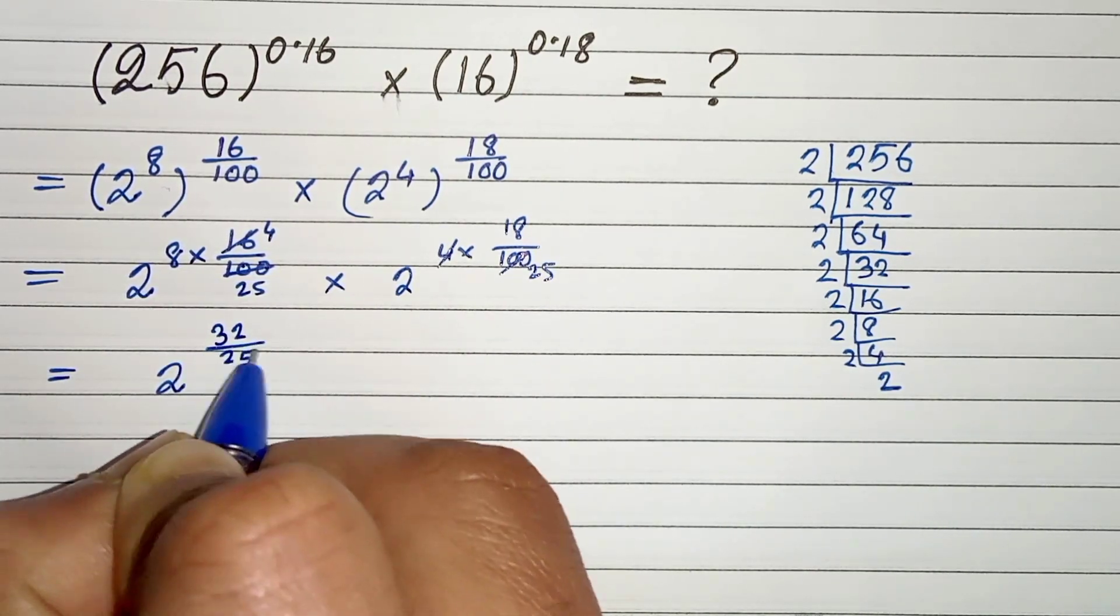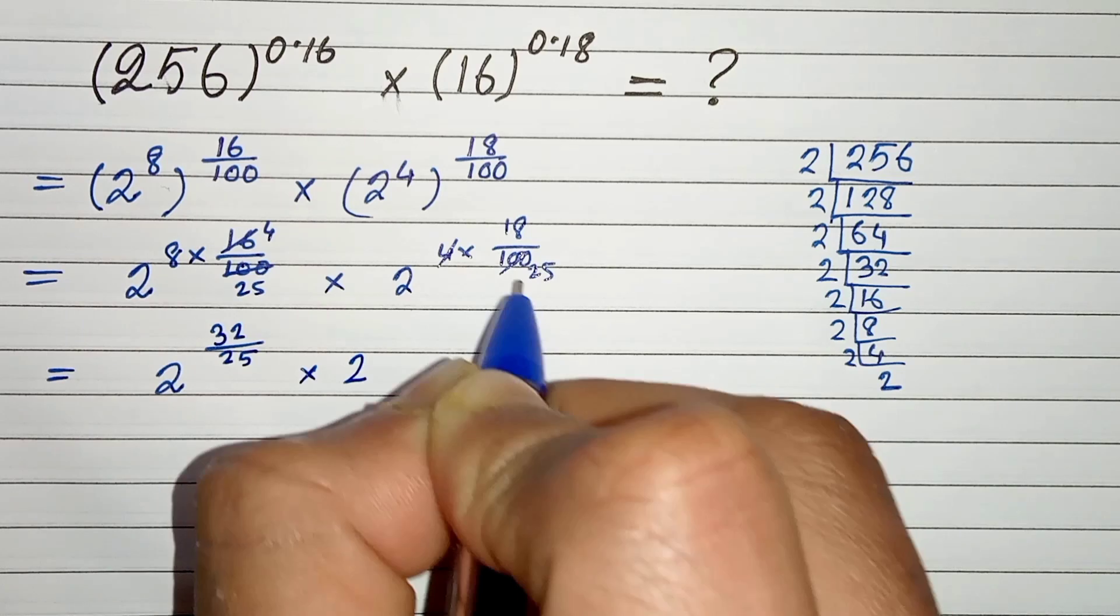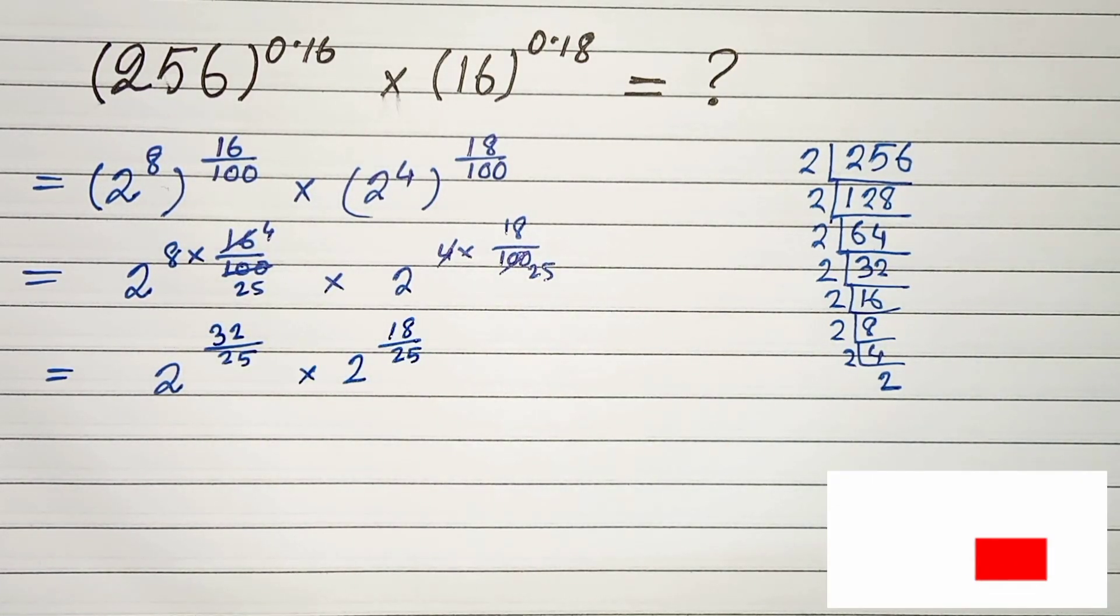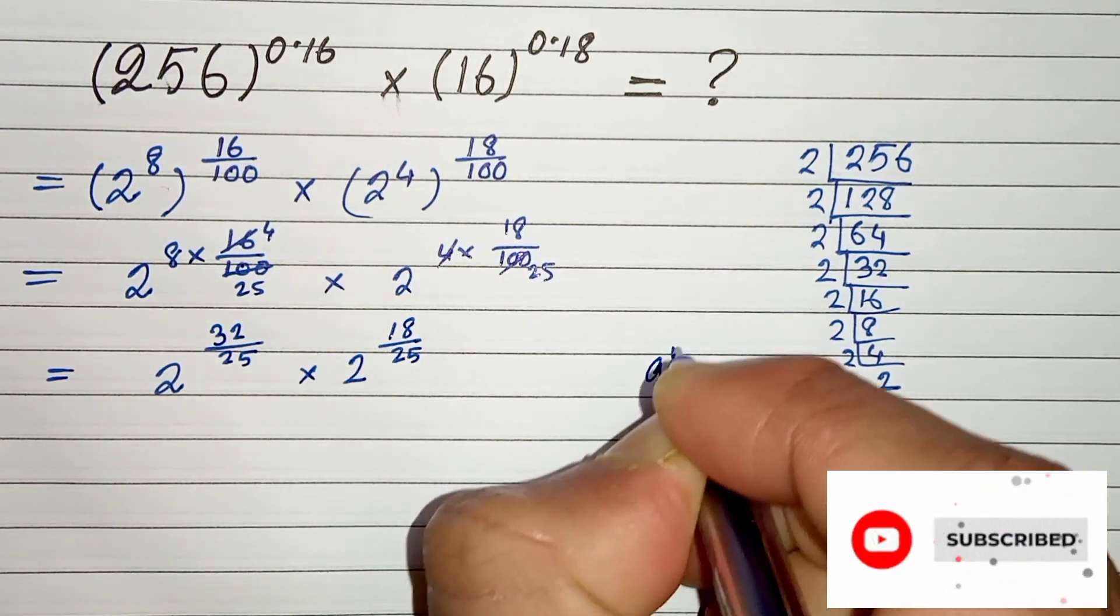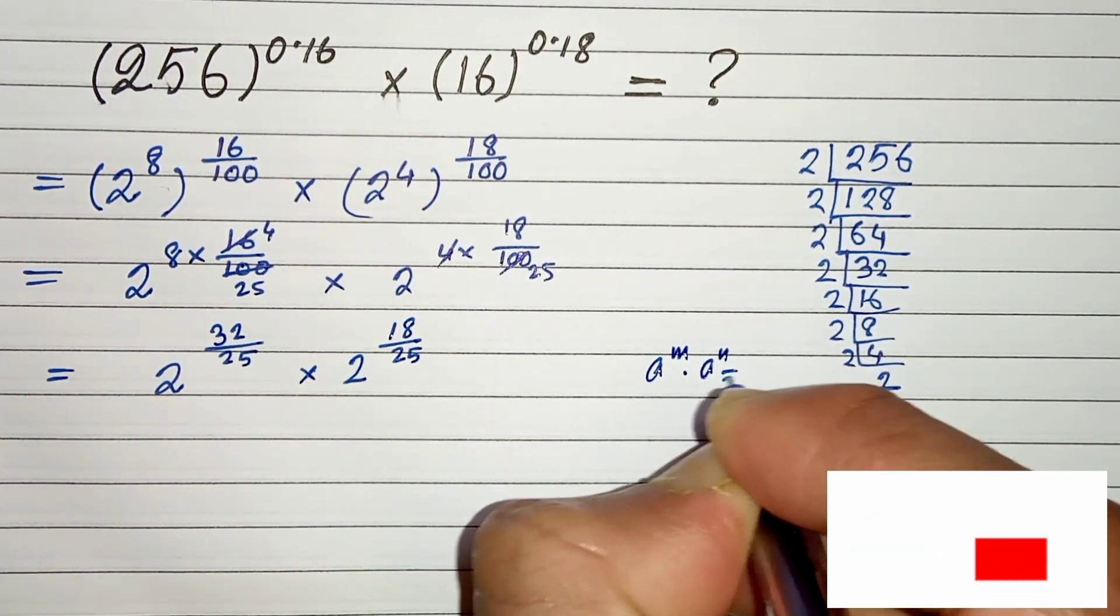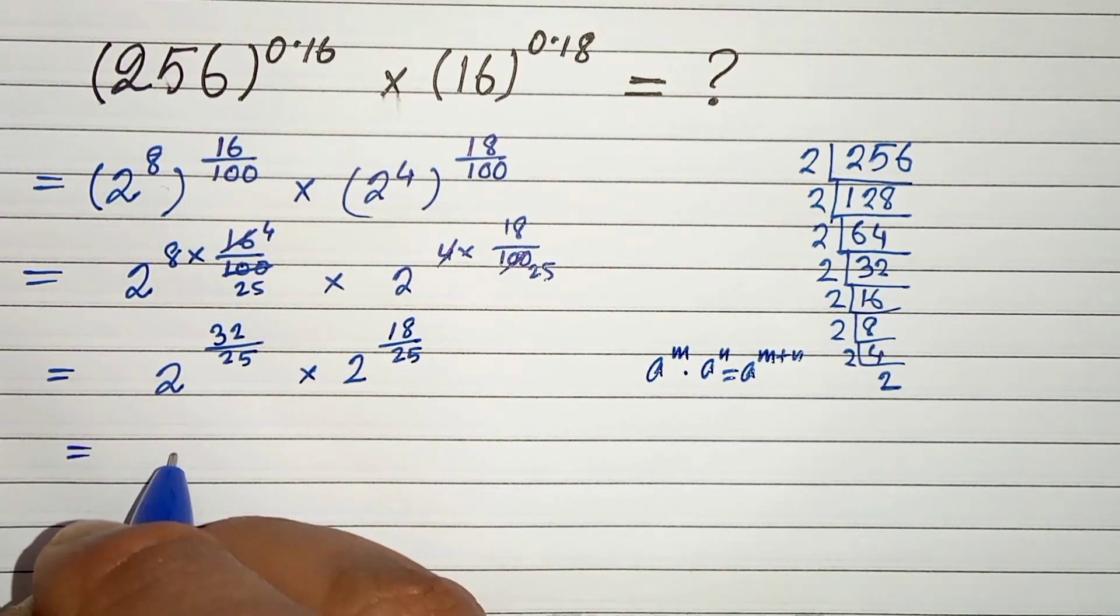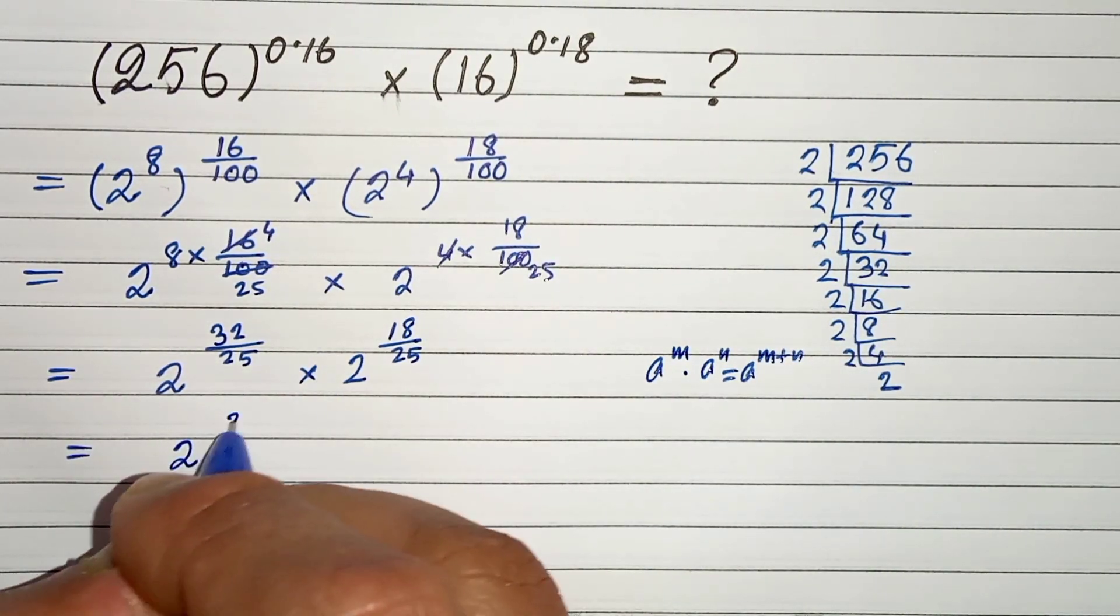Divided by 25, times 2 to the power 18 by 25. And we know that a to the power m times a to the power n is a to the power m plus n. So 2 to the power 32 plus 18 divided by 25.